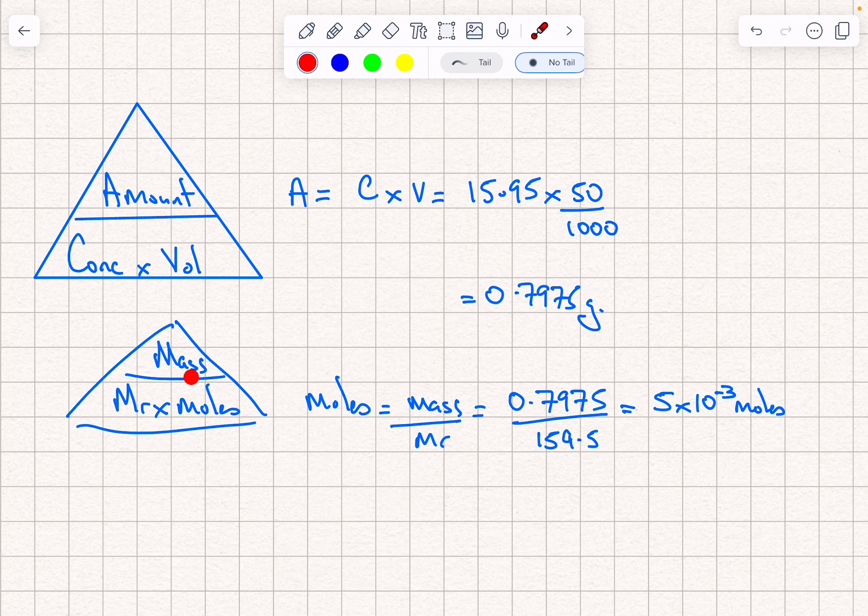So we're finding the moles. Moles is mass divided by Mr. We've got mass divided by Mr, put the mass in from there, just worked out the Mr we're told is 159.5. Divide it all out and you get an answer of 5 times by 10 to the power of minus 3 moles.